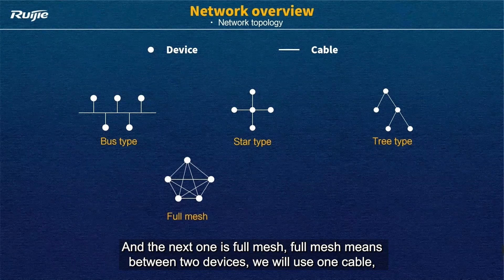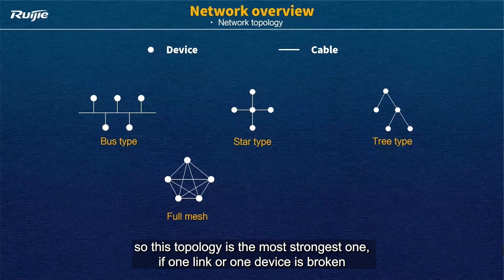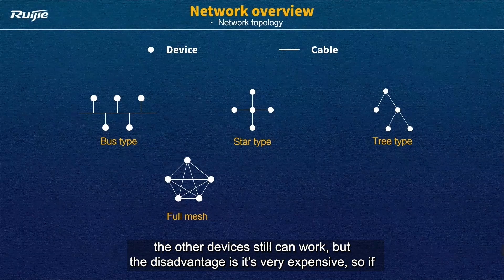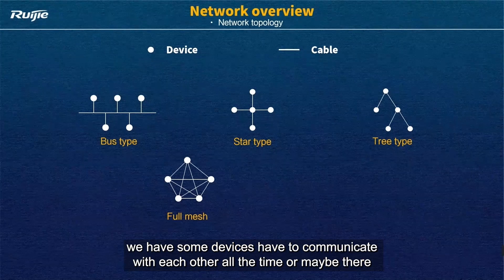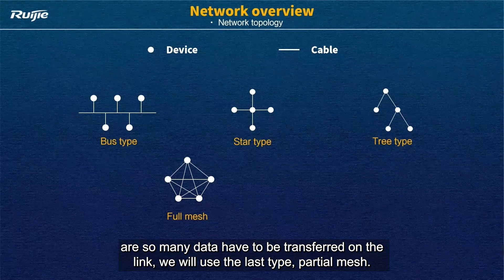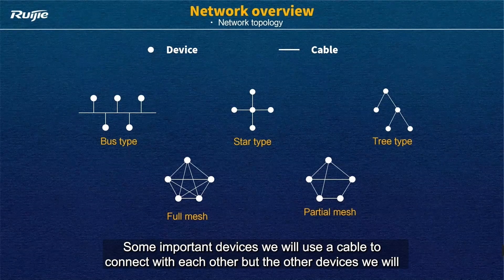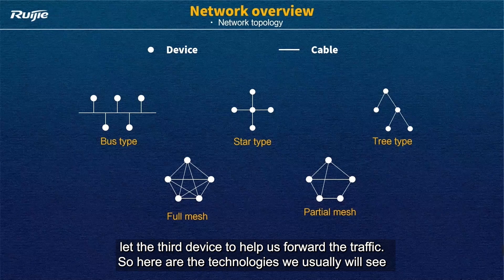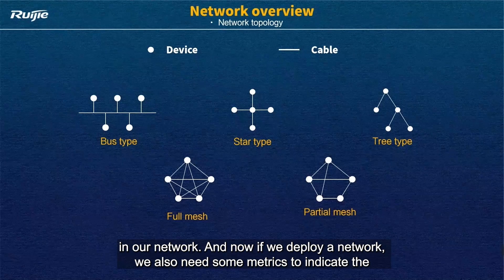The next type is full mesh. Full mesh means between every two devices we use one dedicated cable. This topology is the strongest — if one link or one device is broken, the other devices can still work. But the disadvantage is that it is very expensive. So if some devices need to communicate with each other all the time, or there is a lot of data to be transferred, we use the last type: partial mesh. Some important devices are connected directly with cables, but for other devices we let a third device help forward the traffic. These are the topologies we usually see in networks.